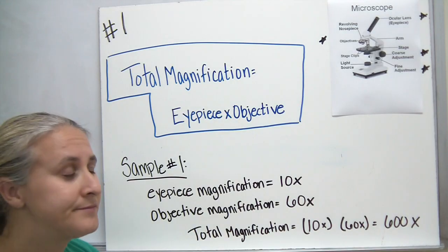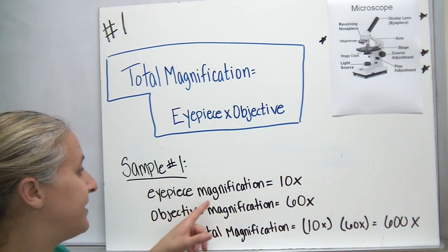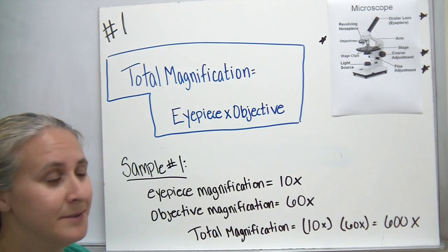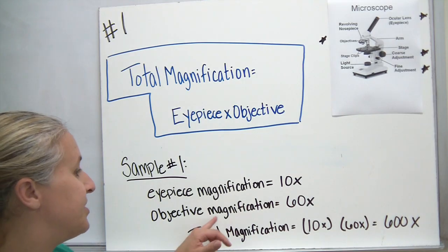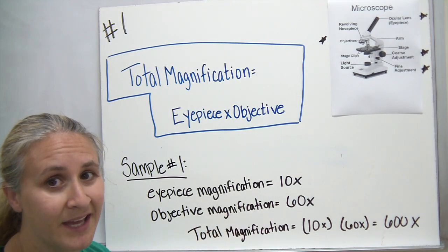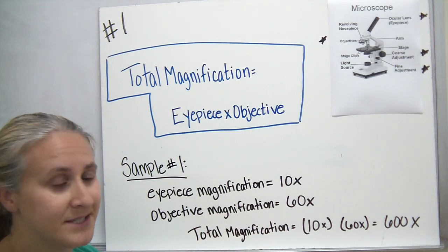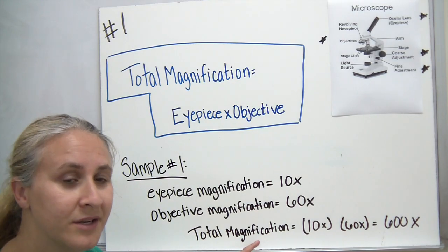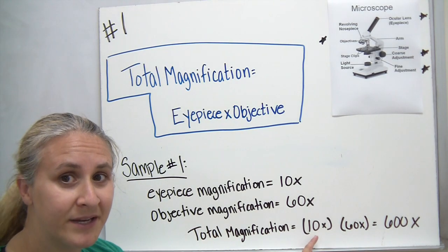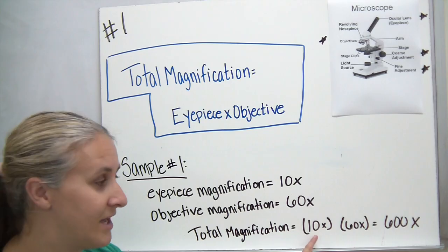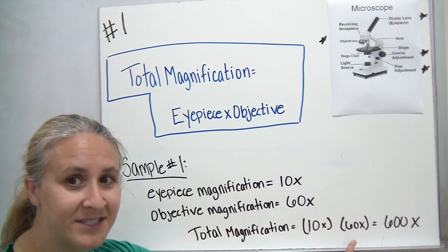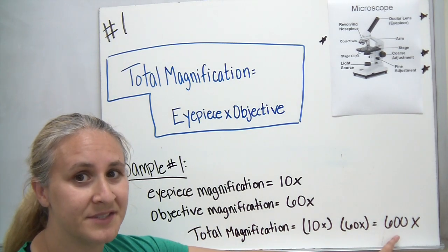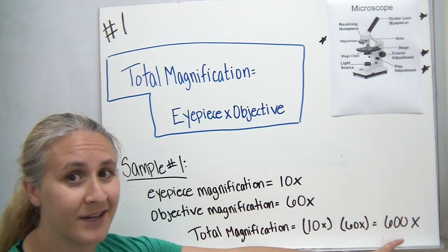So for our example: if the eyepiece magnification is 10x and our objective magnification is 60x, we would calculate total magnification by multiplying the eyepiece magnification of ten by the objective magnification of 60 to get an answer of 600x.